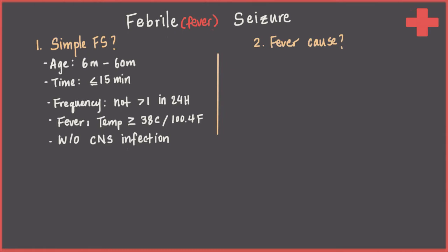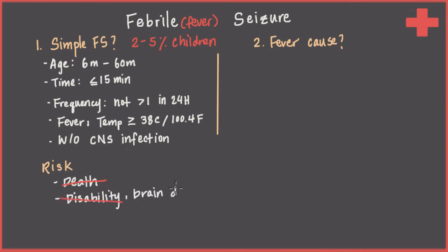If a child doesn't meet one of these criteria, then we go into complex febrile seizures, which is a little more complicated and might involve more of a workup. But all the data we're talking about today applies to simple only. Anywhere from 2% to 5% of all children have at least one simple febrile seizure — that's actually a huge number in terms of disease prevalence. What we know so far is there's no increase in death, no increase in disability, or any kind of brain damage leading to lasting harm. For a kid who has had a simple febrile seizure, the risk of developing epilepsy is only very slightly higher than the general population. The main risk is actually just recurrence — another episode with another fever — and that chance is one-third.